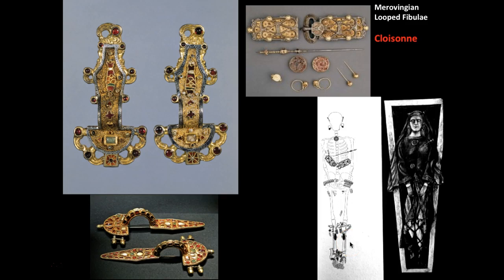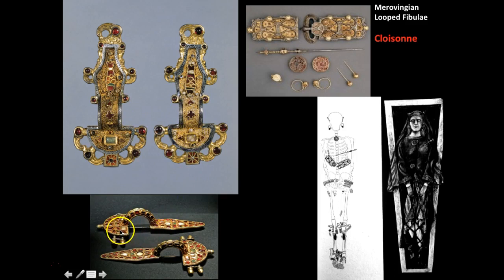Beneath that image you can see the fibulae from a side angle. If you were to lay it flat, you could see what it actually looks like. The function of this piece was to serve as a clasp for clothing, a tradition inherited from the Romans — this is how the Romans would tie up their togas.